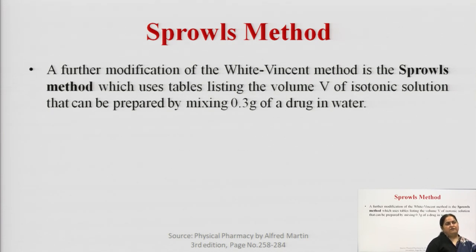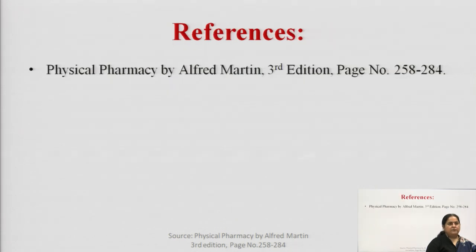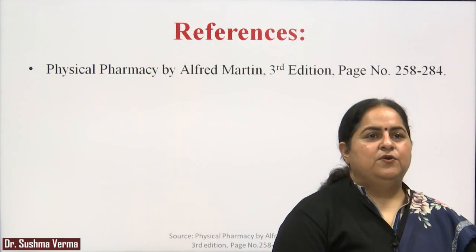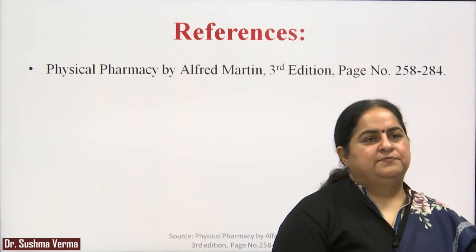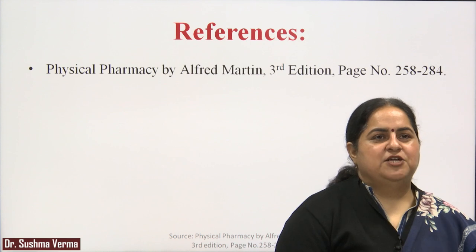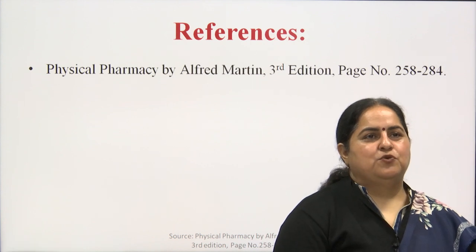So these four methods — the cryoscopic method and sodium chloride equivalent method under class one, and the White Vincent method and Sprawl's method under class two — are the methods to adjust the tonicity of the formulation for different physiological fluids. This completes our chapter. Thank you so much.